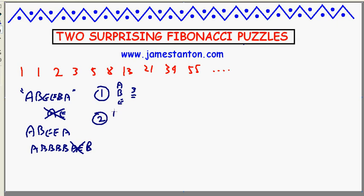Two-letter words. Well, I could have A, A; I can have A, B; but I can't have A, E — that's the only thing that's not allowed. But I could have B, A; B, B; B, E; or E, A; E, B; or E, E. So, apart from that one restriction, I now have eight two-letter words in the language of Bieber.